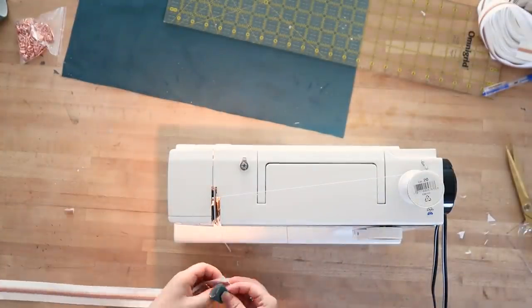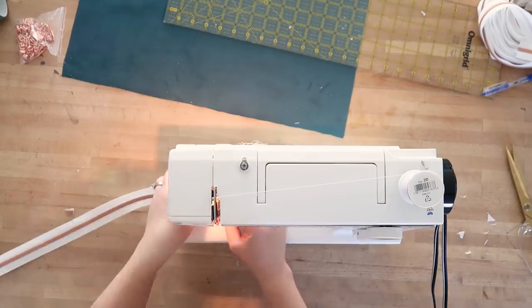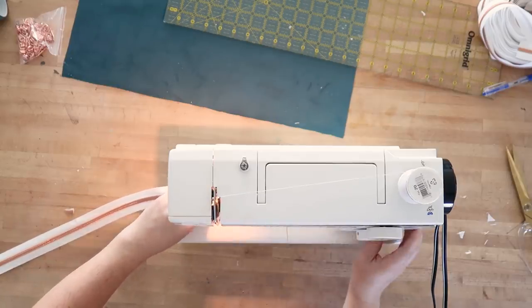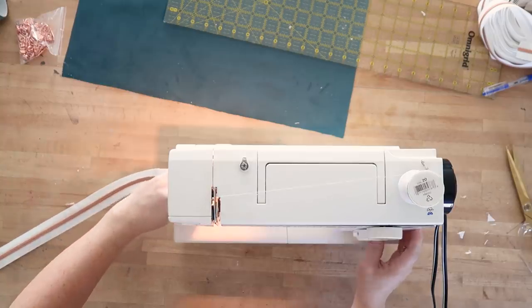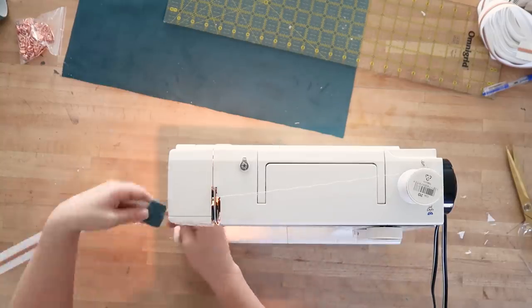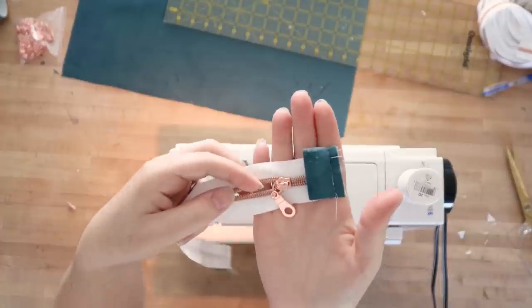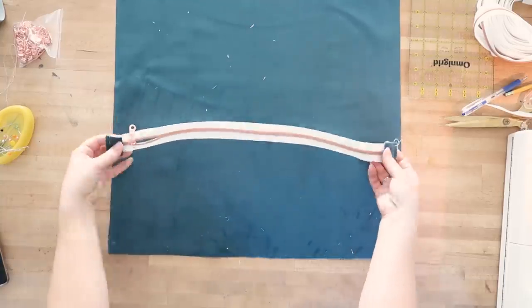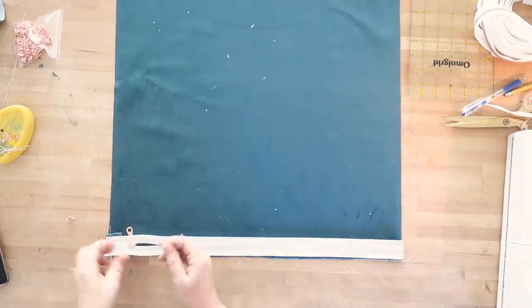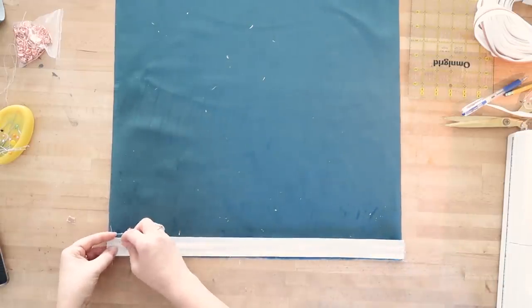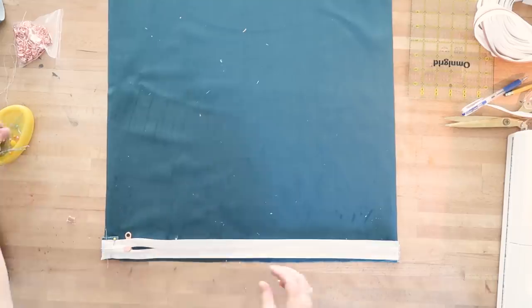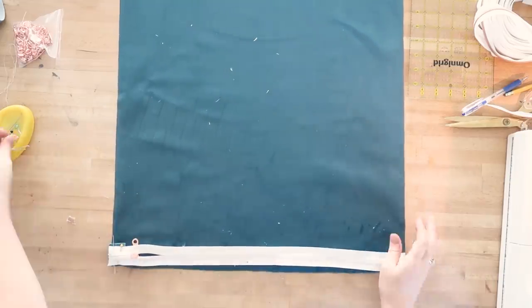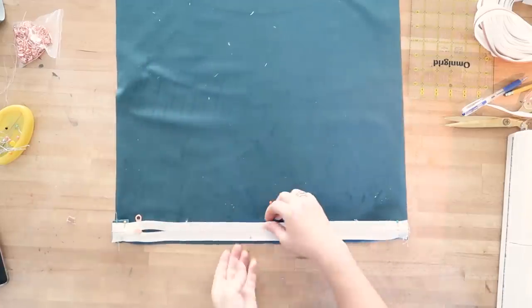So I'm just using a sewing machine. I will link to a similar sewing machine down in the description box below. Love this one. It is very simple but it always does exactly what it needs to do. So you're going to sew one of these pillow stops onto each side just like this. Then you're going to take your zipper. You're going to put it right sides together to one of the sides of your velvet squares and then you're going to pin it to the top of the velvet square just like I'm doing here.